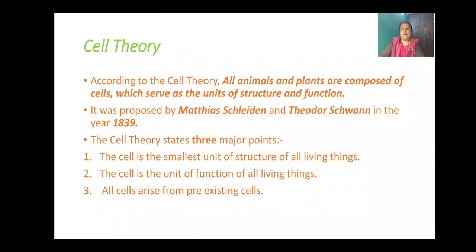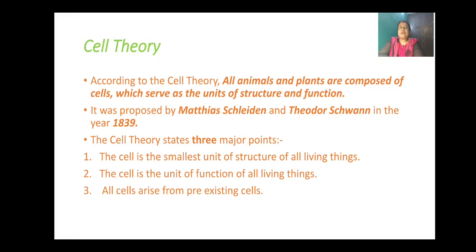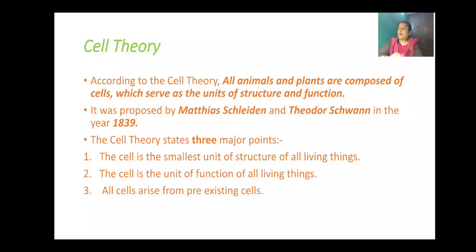Next comes the cell theory. According to the cell theory, all animals and plants are composed of cells, which serve as the units of structure and function. Cell theory was proposed by Matthias Schleiden and Theodor Schwann in the year 1839. It states three major points: first, the cell is the smallest unit of all living organisms and the unit of structure; second, the cell is the unit of function of all living things; and third, all cells arise from pre-existing cells.